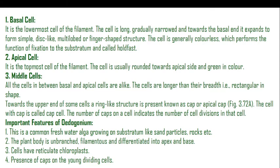The holdfast holds the complete thallus of Oedogonium to a substratum using its disc-like multi-lobed finger-shaped structure. The apical cell is the topmost cell of the filament. It is usually rounded towards the apical side and green in color.